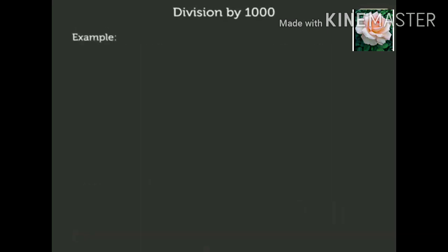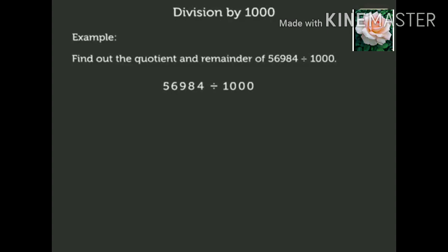Now let us solve one more example without actual division. Find out the quotient and remainder of 56,984 divided by 1000. We know that the digits in the ones, tens, and hundreds place of the dividend form the remainder. Thus, here 984 is the remainder and the remaining digits form the quotient. Thus, here 56 is the quotient.